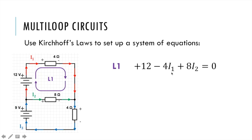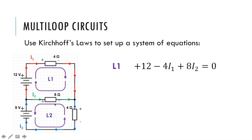We can't solve this yet because we have two unknown variables and only one equation, which means we need to set up a system of equations to solve. We'll need at least one more, so we'll do another loop — let's go the other way through the bottom, counterclockwise. I'll label this L2. I'll usually label these if you have multiple loops; it'll help you keep your work clean. So we'll come up with an equation for this loop.